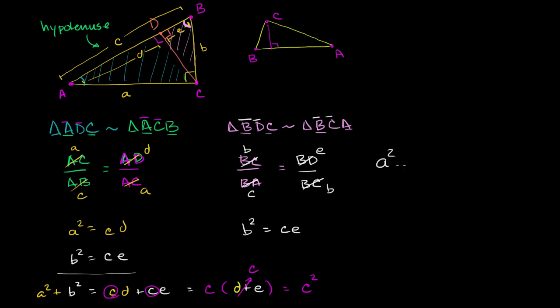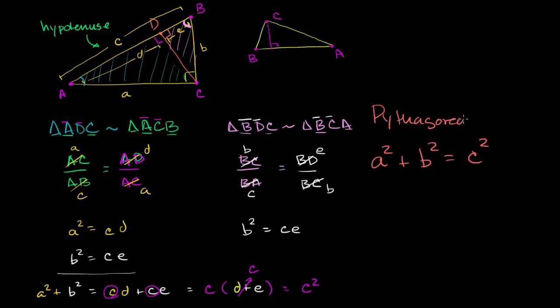So we've just established that a² + b² = c². This was an arbitrary right triangle, so this is true for any right triangle. The sum of the squares of the two legs equals the square of the hypotenuse. This is one of the most famous theorems in mathematics, named for Pythagoras — the Pythagorean theorem. It's really the basis of a lot of geometry and trigonometry, and it's extremely useful: if you know two sides of a right triangle, you can always find the third.